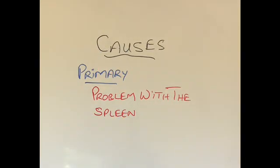Primary hypersplenism is rather uncommon. Conditions like ITP, or idiopathic thrombocytopenic purpura, are examples in which the platelet count becomes very low because there is something wrong with the spleen. Despite having a normal size spleen, it starts destroying our platelets, and hence the patient has a tendency to start bleeding even from minor injuries or minor cuts — and the bleeding can be life-threatening.